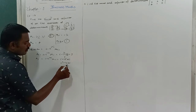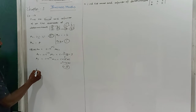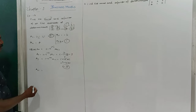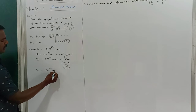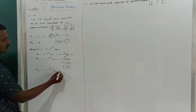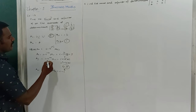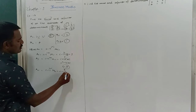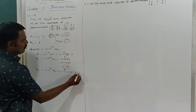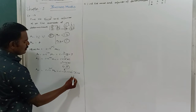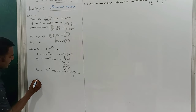Cofactor A21 = (-1)^(2+1) × M21 = (-1)^3 × (minus 2) = -1 × -2 = plus 2.